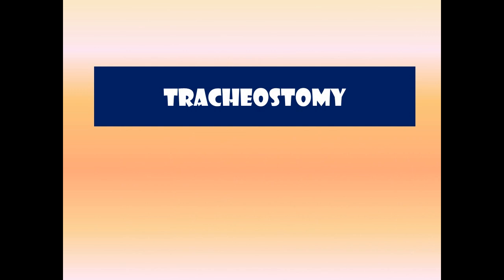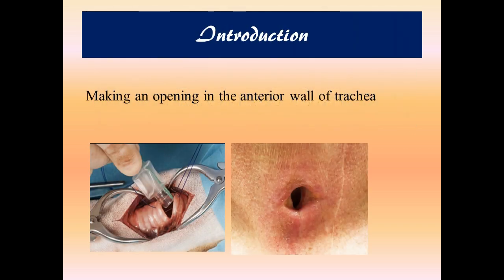Today's video is about tracheostomy, which is one of the very crucial procedures in airway management. Tracheostomy means making an opening in the anterior wall of the trachea to assist the patient in breathing. As shown in the picture, there is an artificial opening that is made and a tube has been inserted into the tracheal ring. Outwardly, it would appear like a stoma.